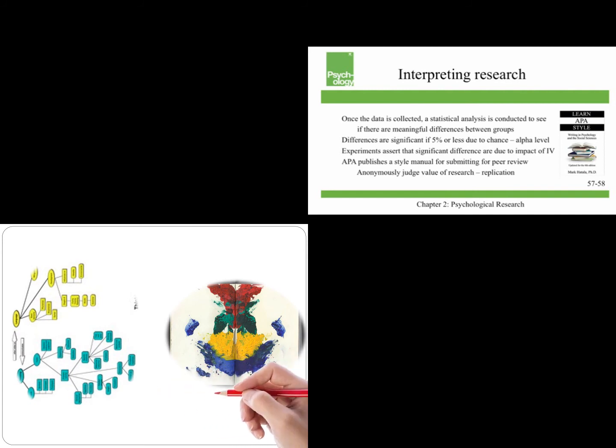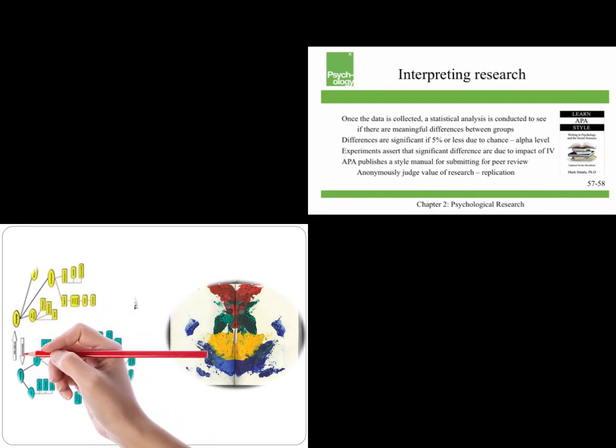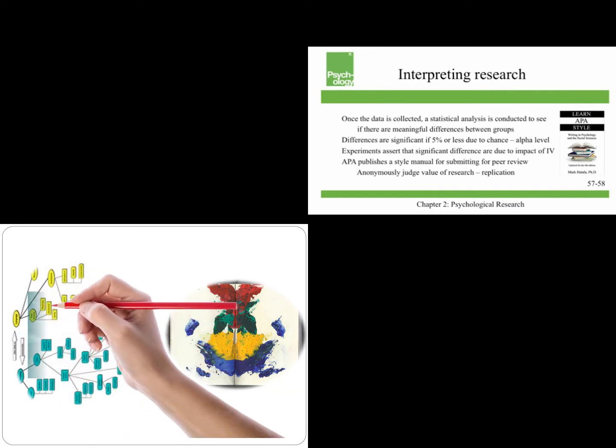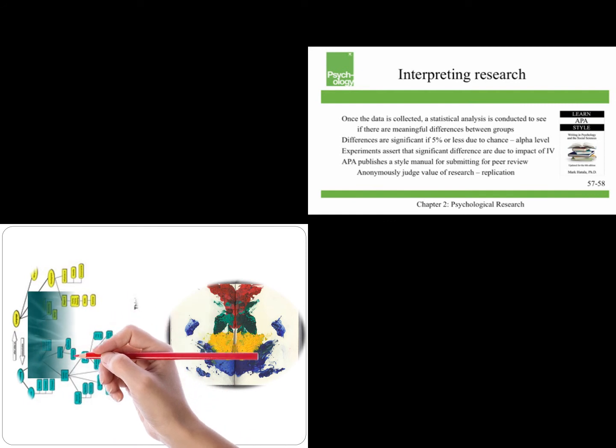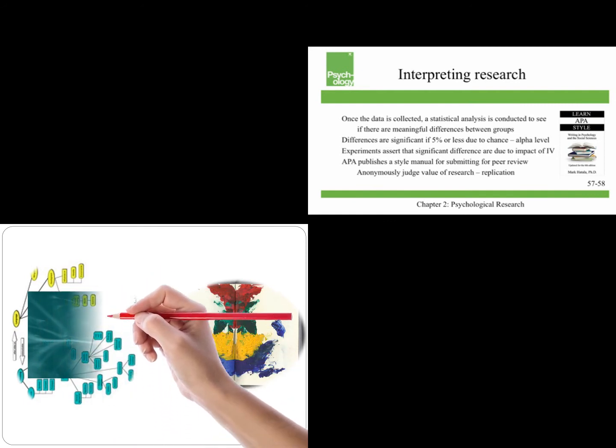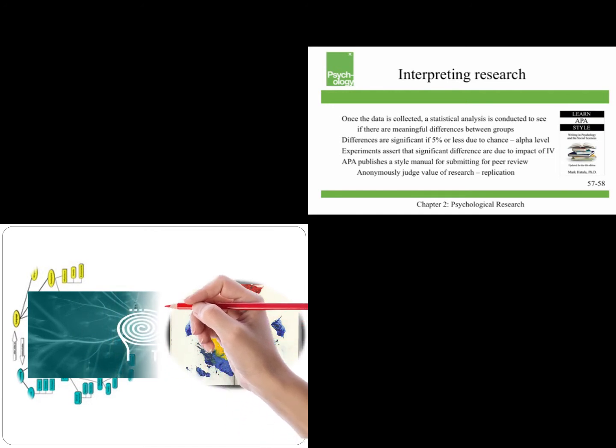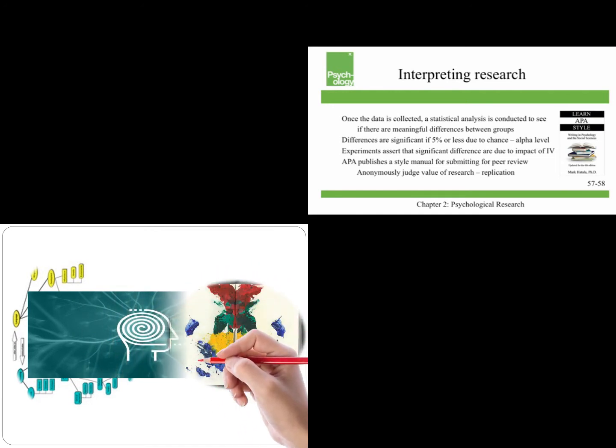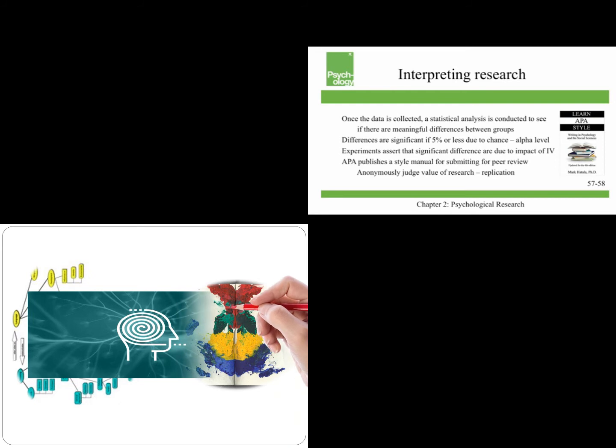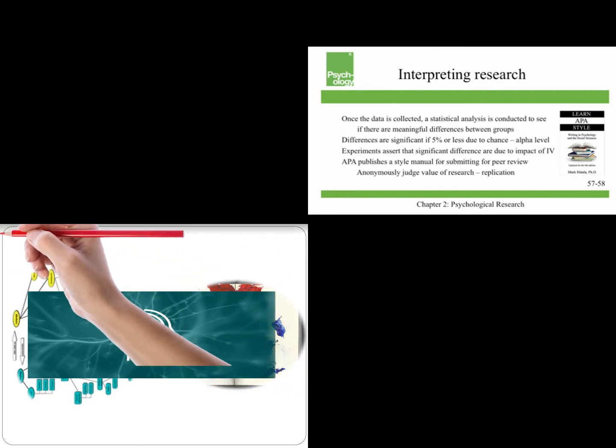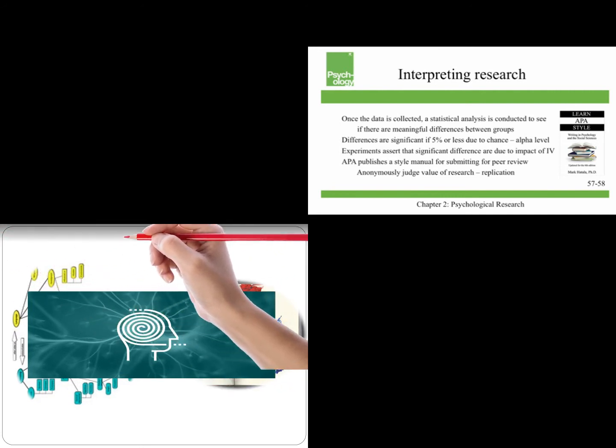These peers anonymously judge the value of your research, and they're usually professionals and scholars who are actively involved in research themselves. One of the reasons why they're examining your research is due to replication. So peer review makes sure that other scientists can replicate the research, which means that they can repeat it and get the same results, which is crucial to the scientific method.